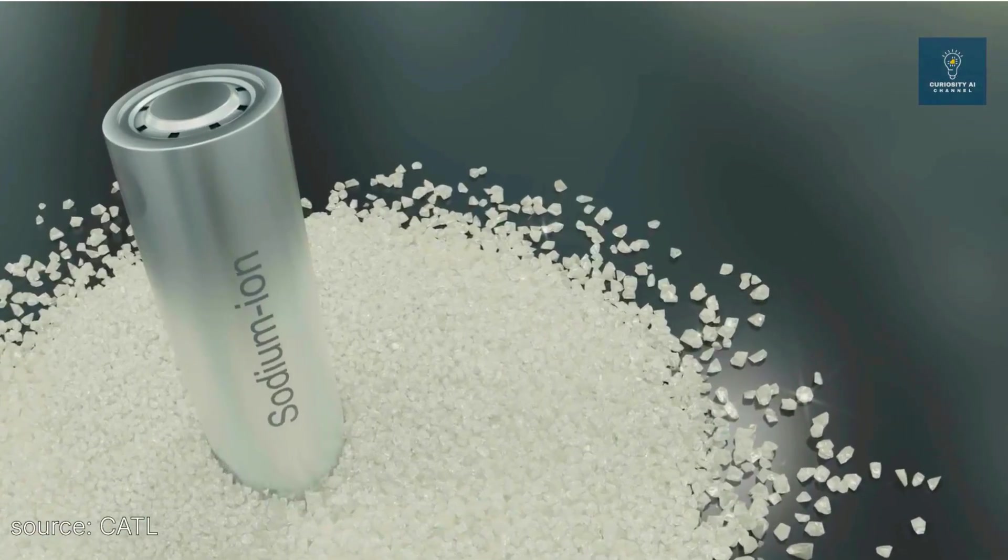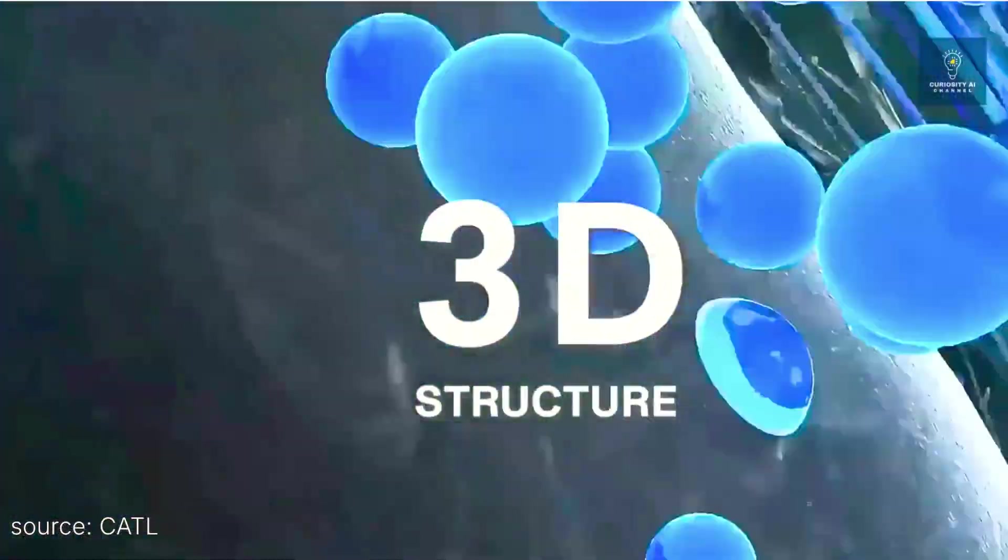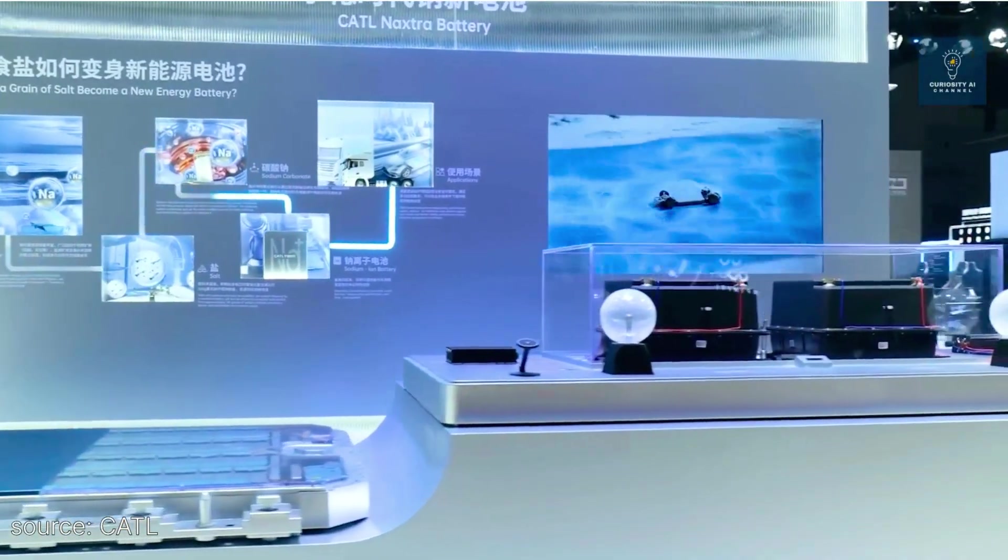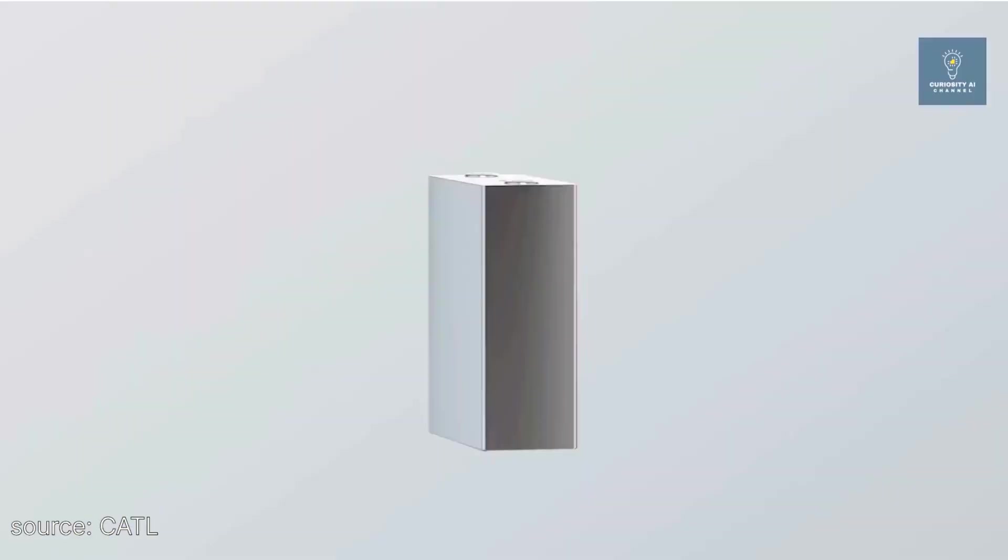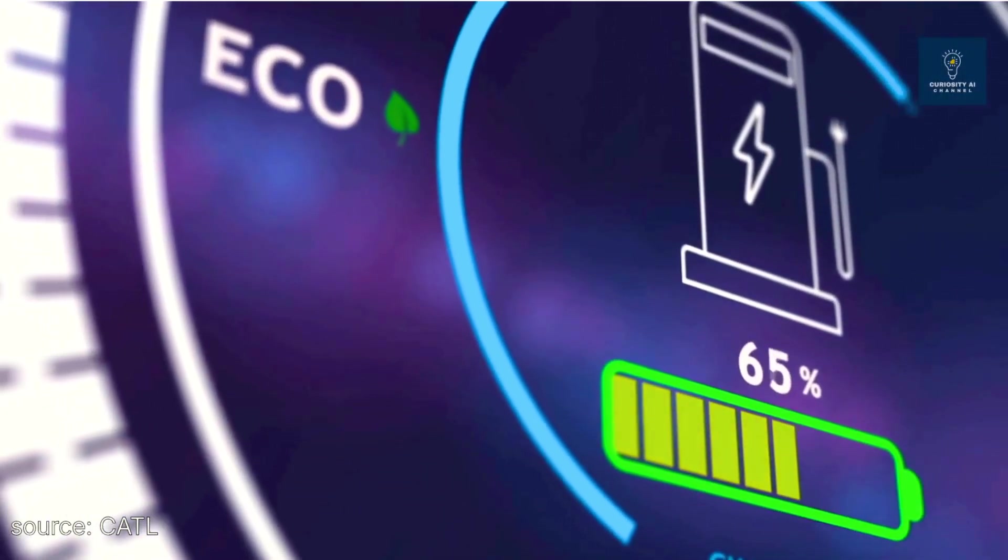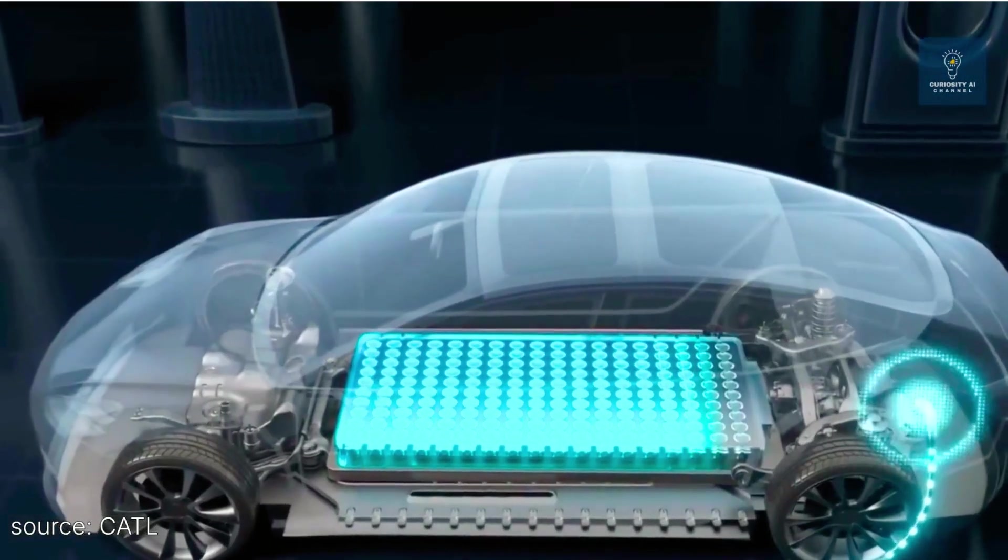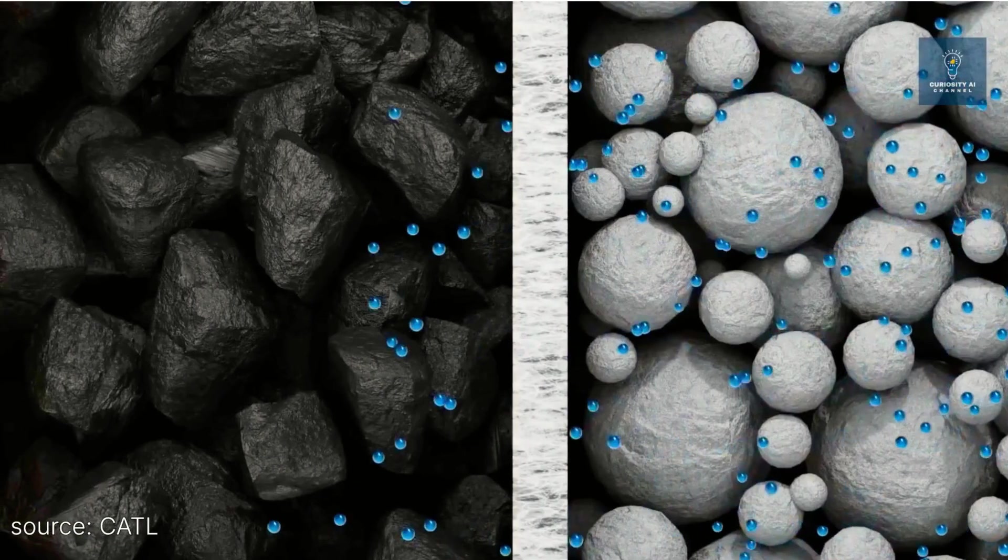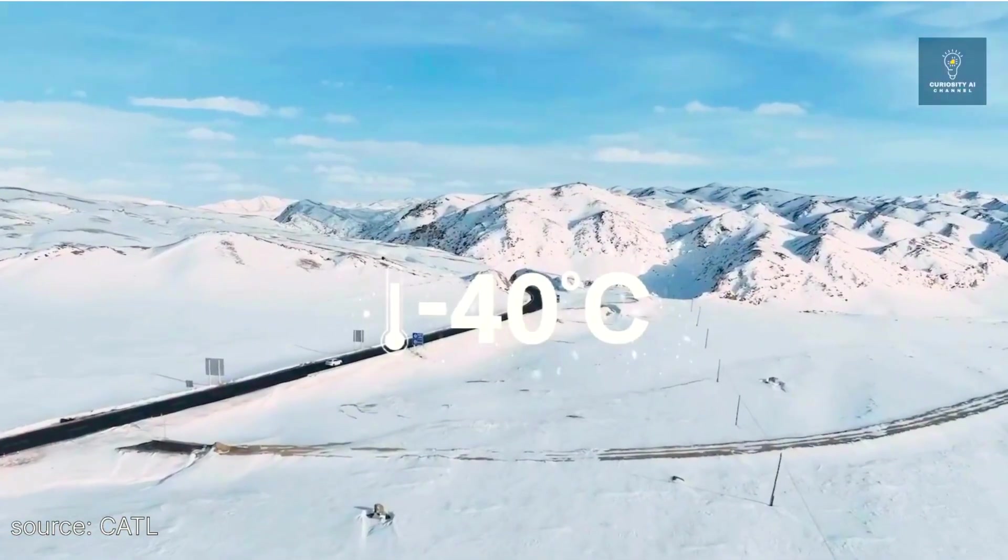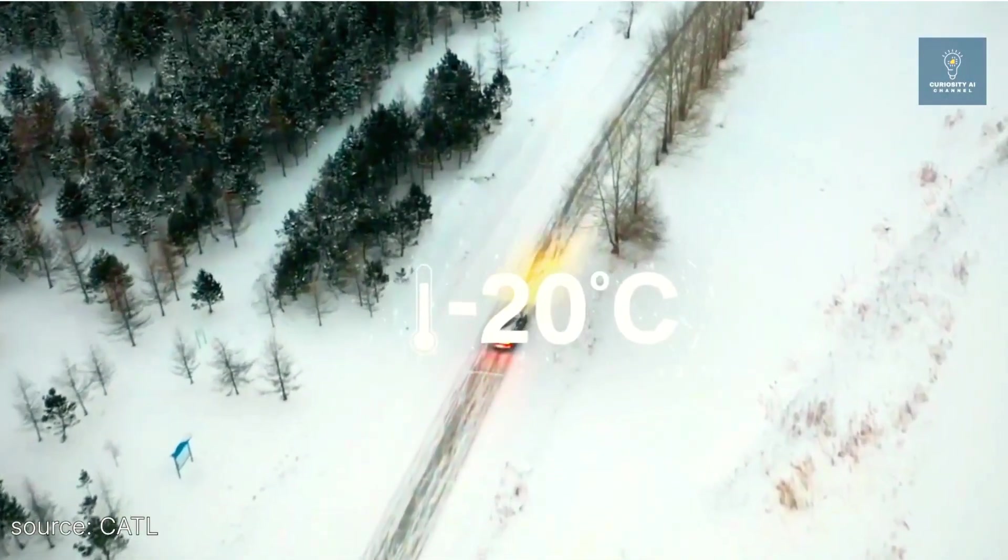Sodium-ion technology has historically suffered from lower energy density, shorter cycle life, and surprisingly high manufacturing costs despite cheap raw materials. CATL claims they've solved these fundamental problems with their new Naxxra battery technology. The specifications they're announcing are genuinely impressive. 175 watt-hours per kilogram energy density, over 10,000 charge cycles, and operation from minus 40 to plus 70 degrees Celsius.